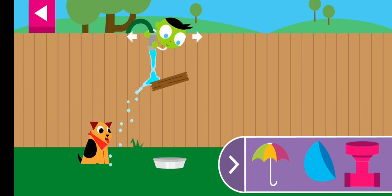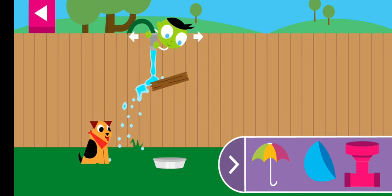A wooden board is blocking the water. Move the hose and put objects on the wall to create a path for the water to reach the dog's dish.